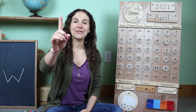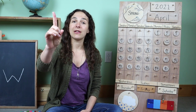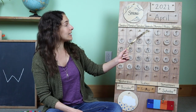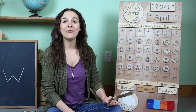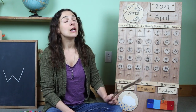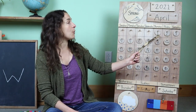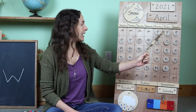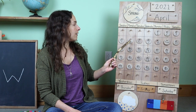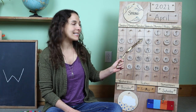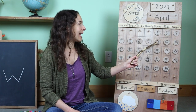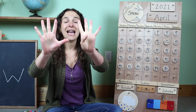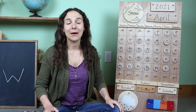Can I see your counting fingers? Give them a little stretch to warm them up. We are going to count all of the days we've had so far in the month of April. Let's start at the top with the number one: two, three, four, five, six, seven, eight, nine. We have had nine days so far in the month of April.